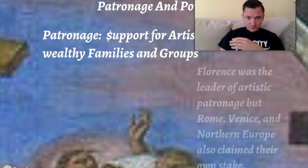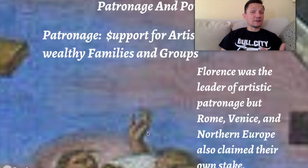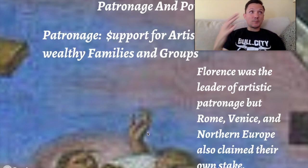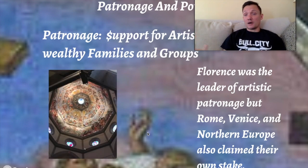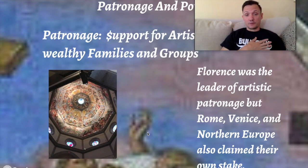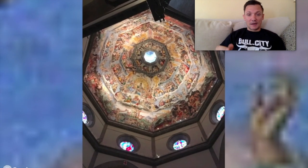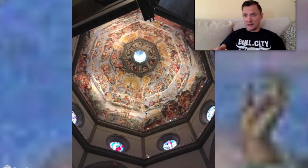Florence was actually the leader of artistic patronage, but Rome, Venice, and northern Europe are also going to claim their own stake as time goes on. One of the best examples of early patronage is of course Brunelleschi's dome on the Duomo in Florence — the Santa Maria del Fiore.